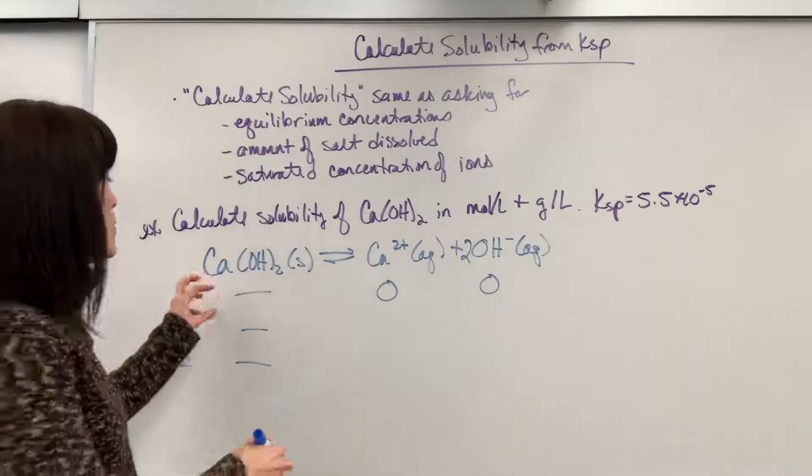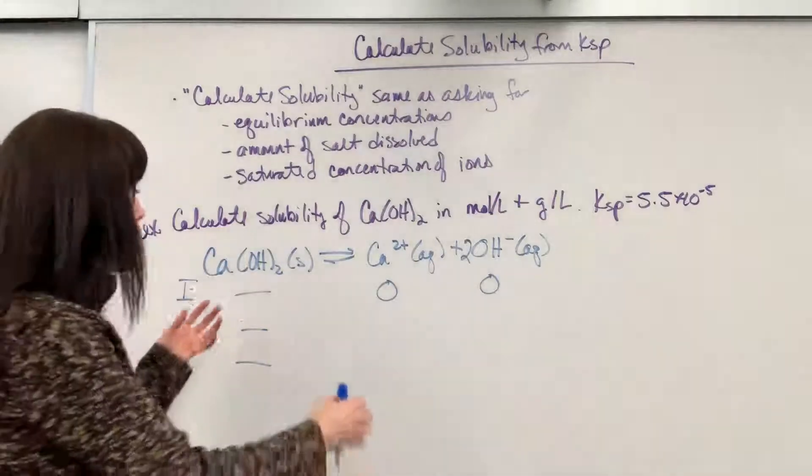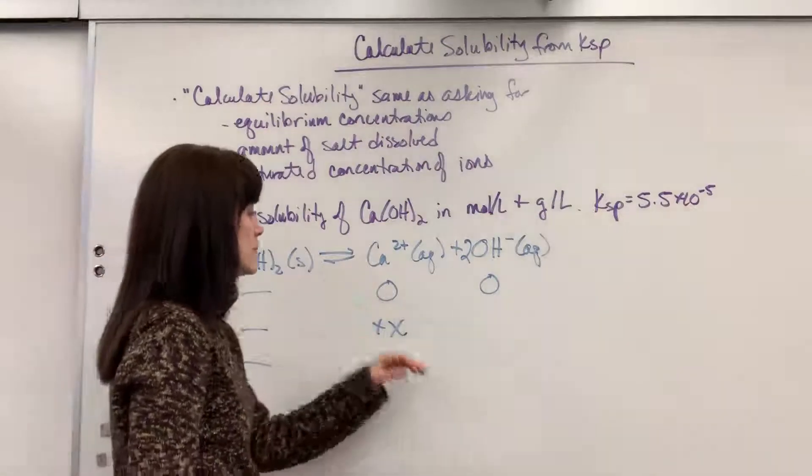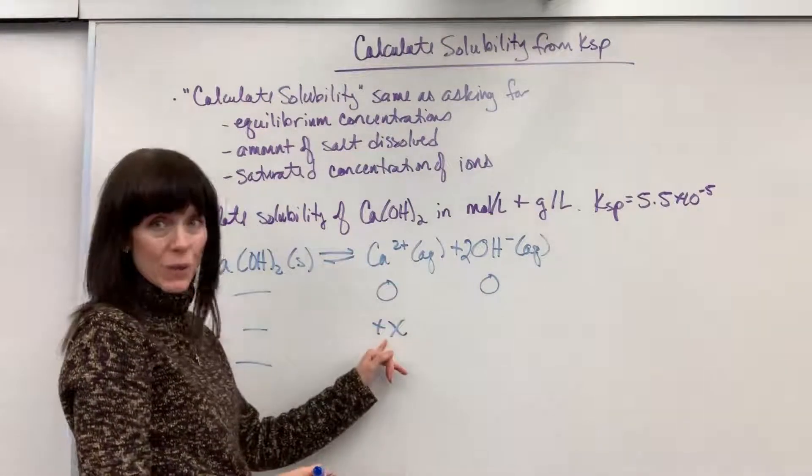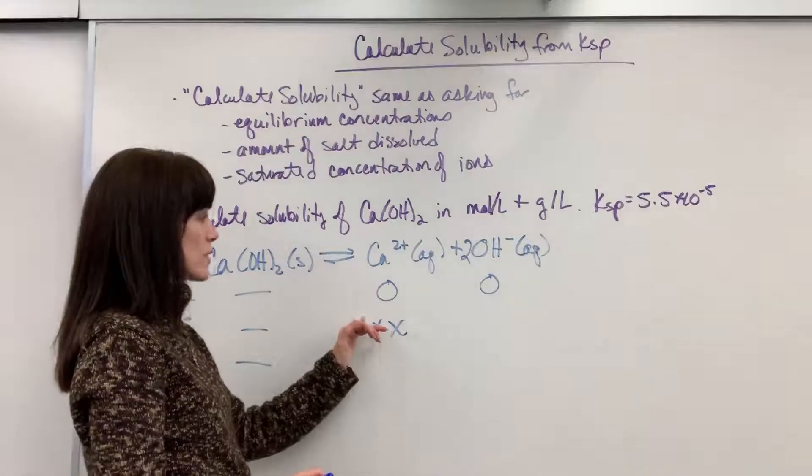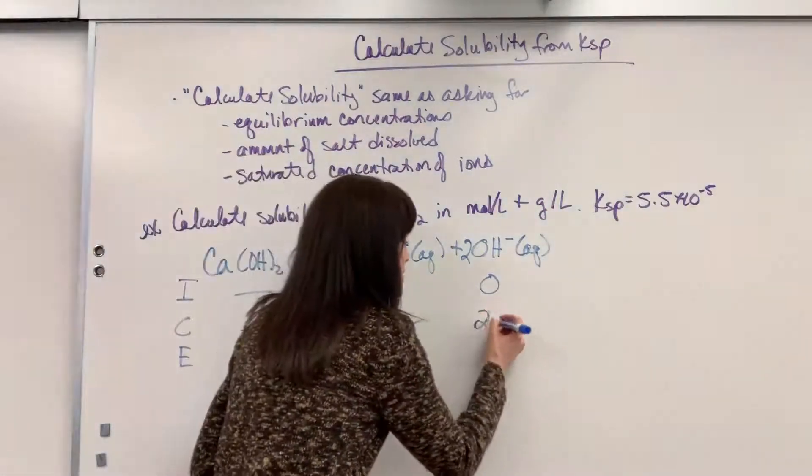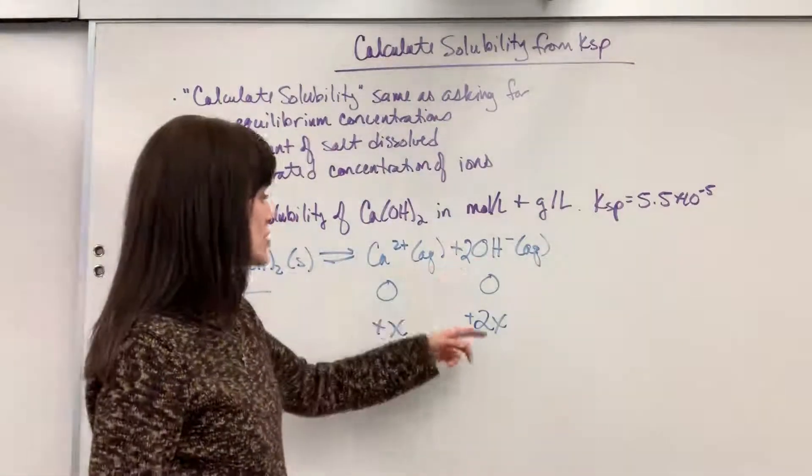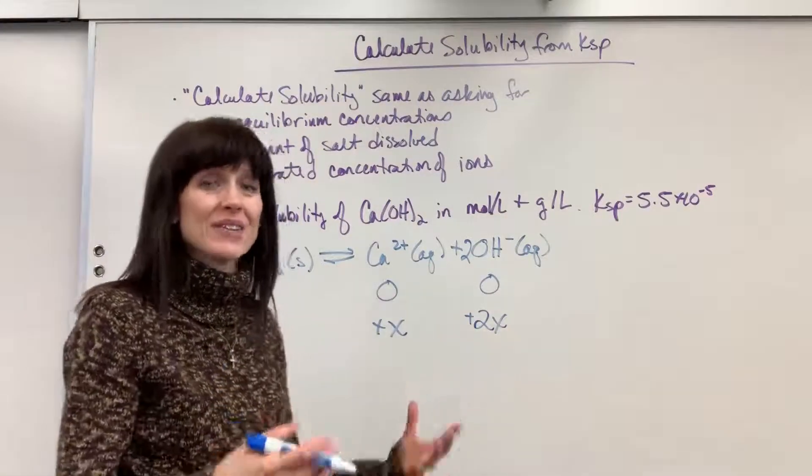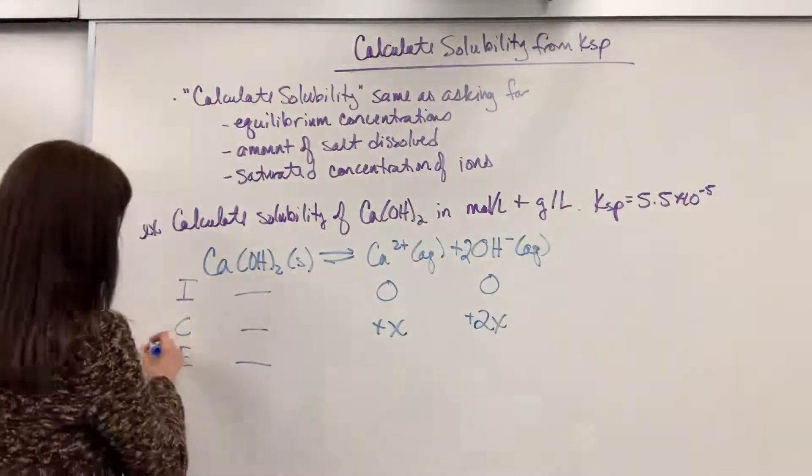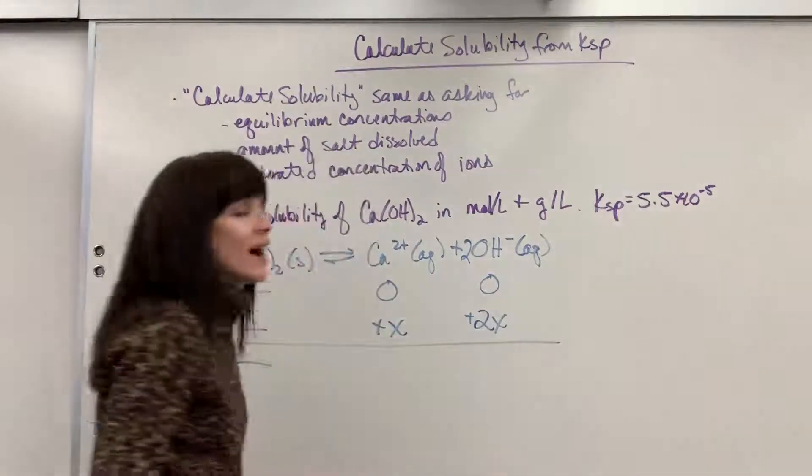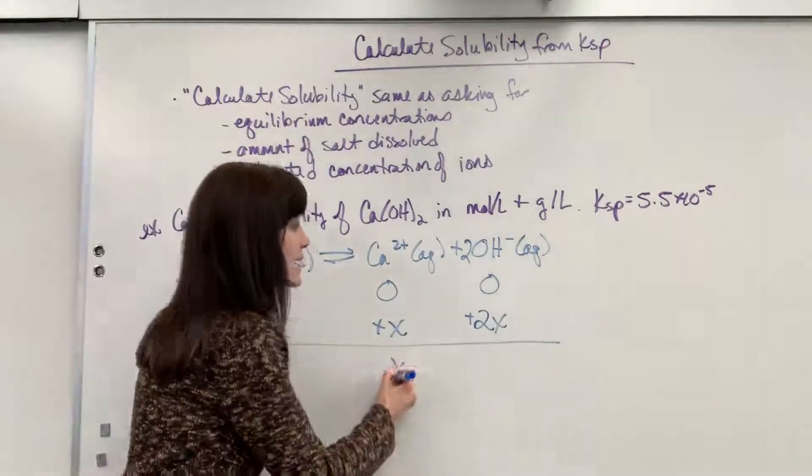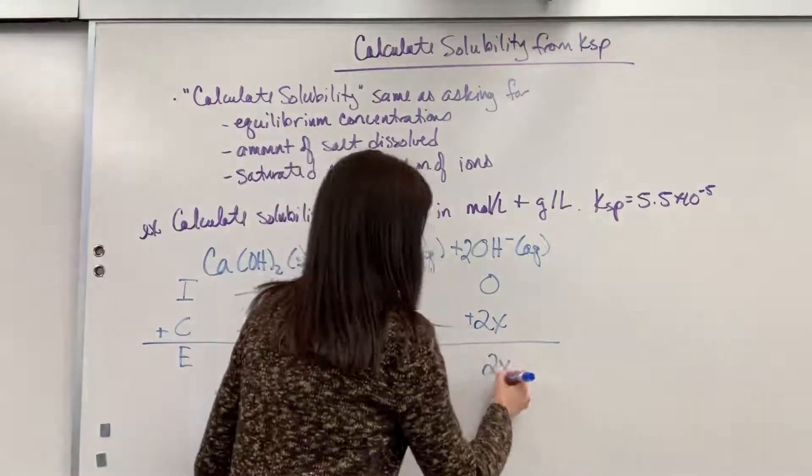Now change. So this is going to break apart and when this dissociates it will produce an amount of calcium—notice the coefficient one. So one mole, every one mole that dissociates produces one mole of calcium and 2x, two moles of the hydroxide. Remember you just look at the coefficient and that's the number that you put in front of x, the unknown amount that dissociates. I plus C gives us E. Zero plus x is x. Zero plus 2x is 2x.